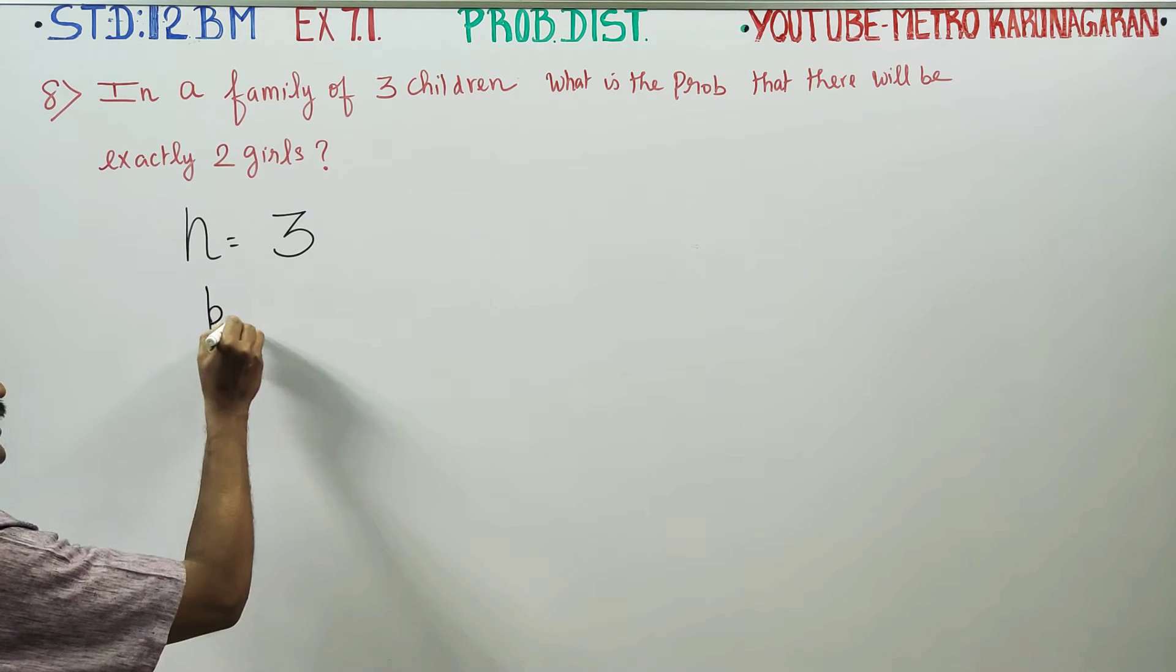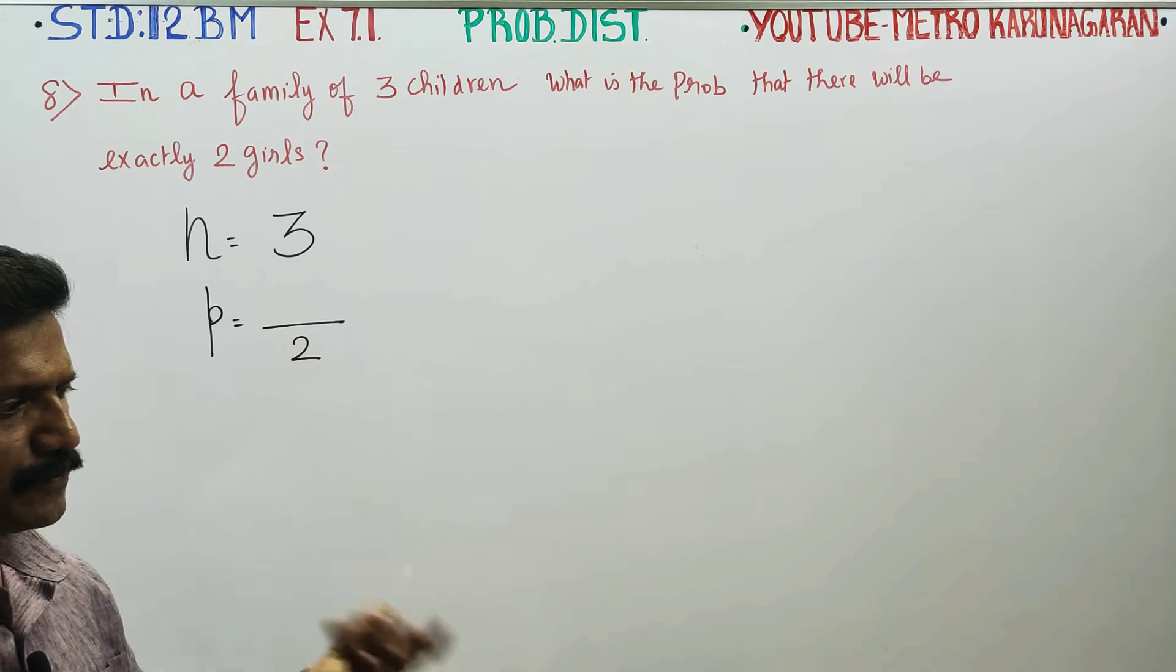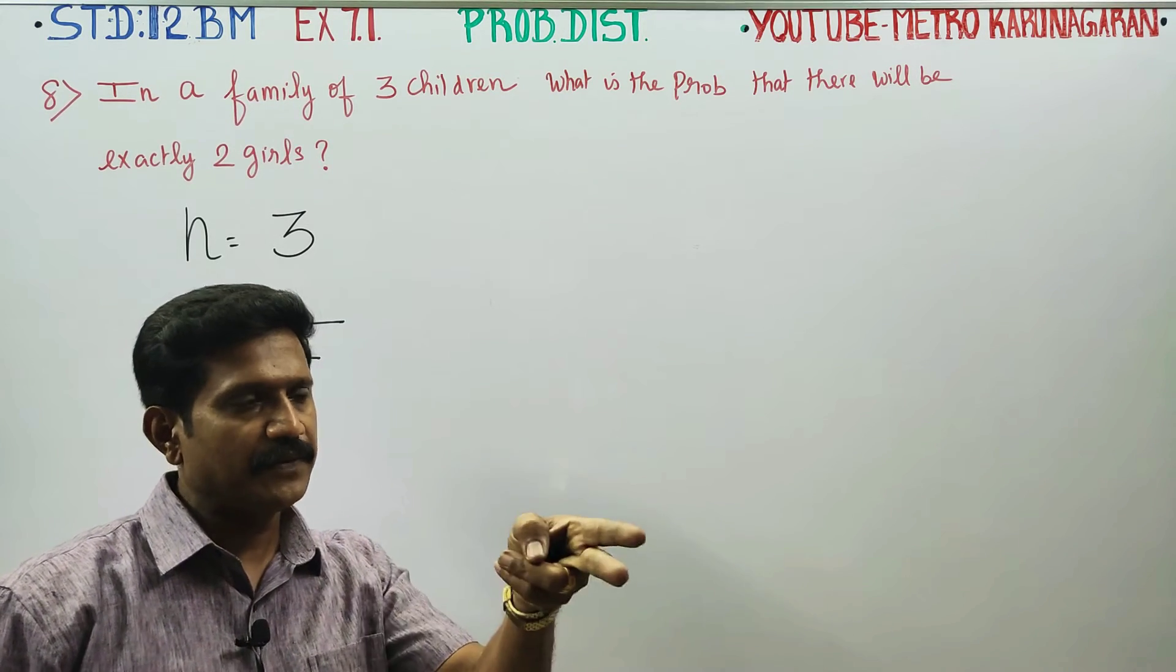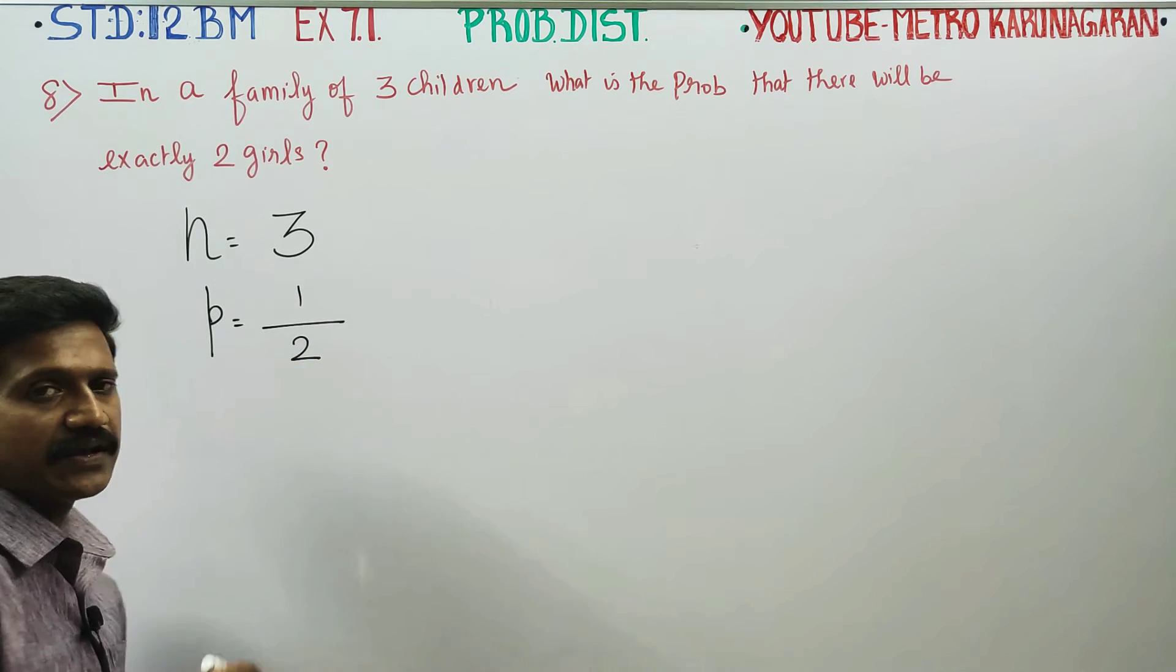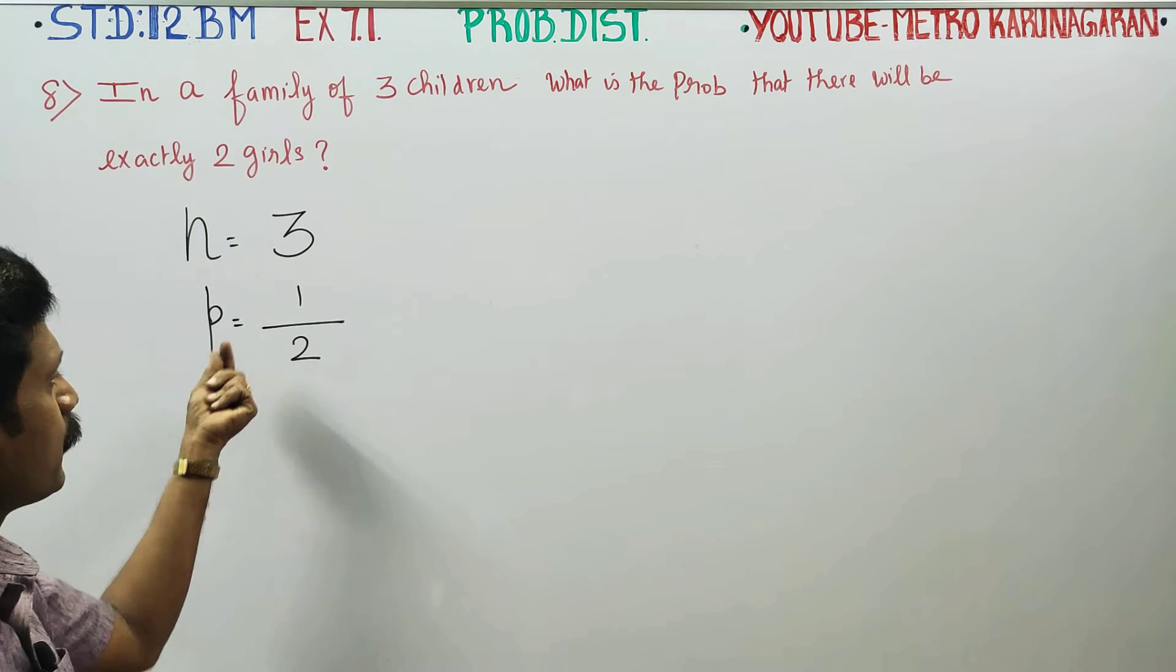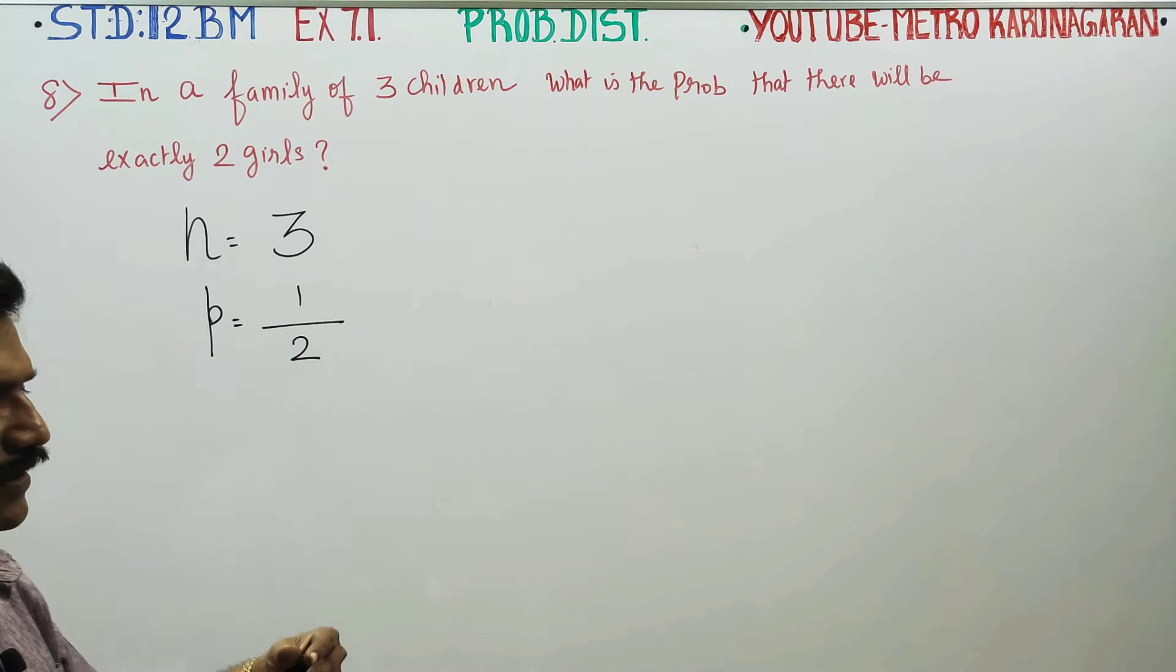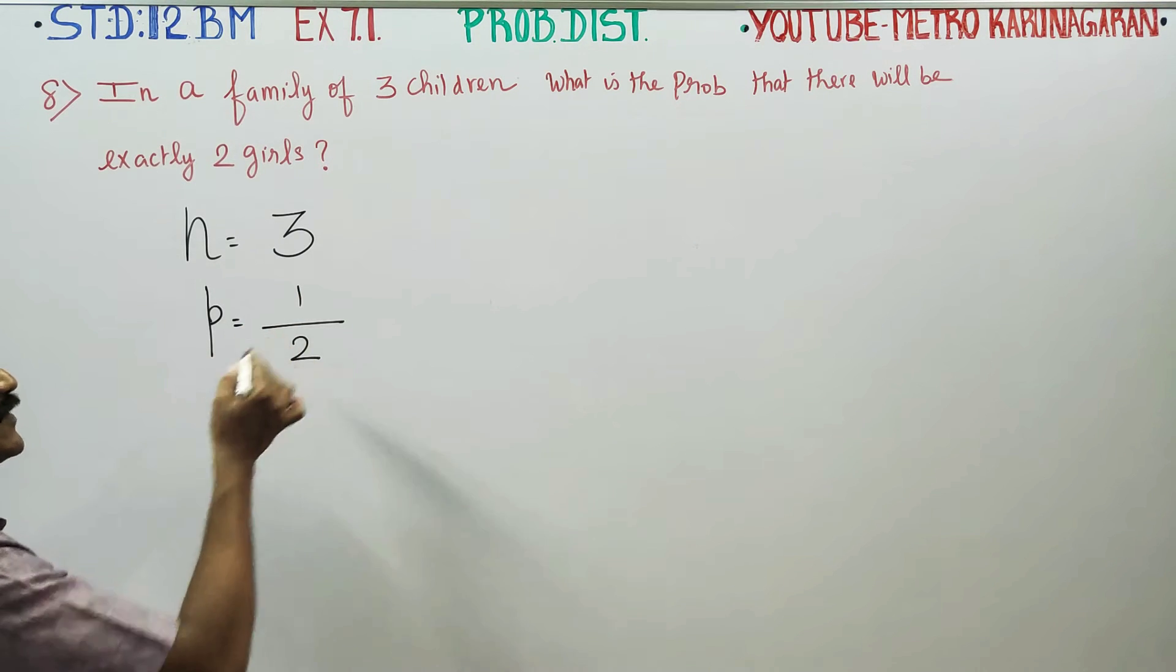The probability of a girl child is male and female. What is the probability of a girl child? Male and female, the first choice is the chance of girl. 1 by 2 is success. If the probability of a girl is 1 by 2, then the probability of a girl is 1 by 2. This is the probability of success.